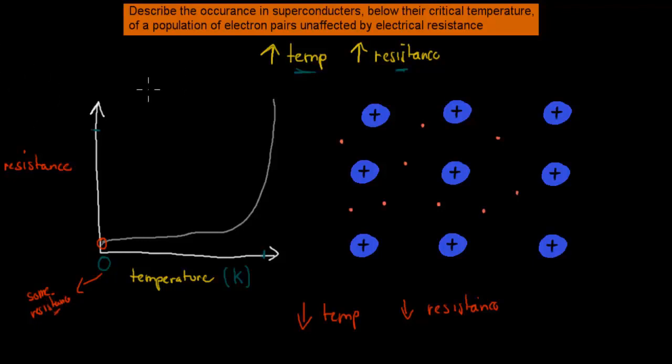This is what we expect. This is the expected observance of resistance and temperature, and actually for most elements this is what we get. This is the actual pattern for most elements. But what we have to talk about in this video is describe the occurrence in superconductors.